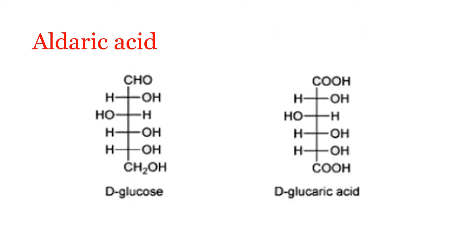When both C1 and C6 are oxidized — the first carbon being the carbonyl carbon and the sixth carbon being the primary alcoholic group — we get a dicarboxylic acid called glucaric acid. In the case of glucose we get glucaric acid, which is also called saccharic acid.